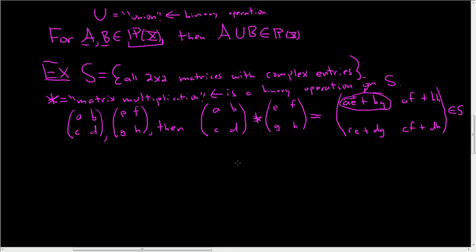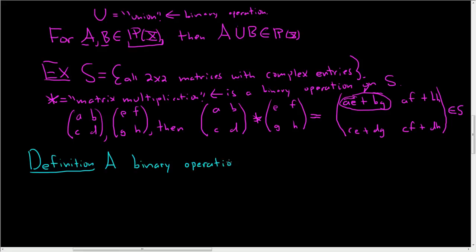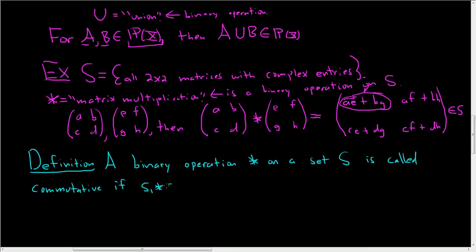Sometimes binary operations have special properties. One of those properties is the property of being commutative. A binary operation ★ on a set S is called commutative if whenever you take s1 ★ s2, that's the same thing as s2 ★ s1, and this has to hold for all s1, s2 in S.